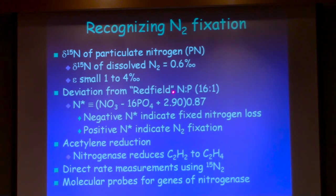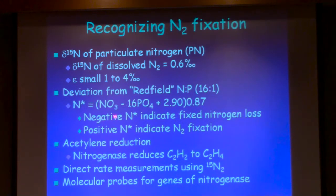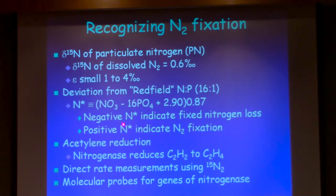Deviations from the Redfield ratio can also be used — we expect that the Redfield ratio will be maintained in dissolved nutrients. The 16-to-1 N-to-P ratio: if we see a deviation from that, a positive N2 fixation adds to it. If you have more nitrate than you would expect for phosphate based on that Redfield ratio, this N* defined globally from nitrate and phosphate concentrations shows an increase — a positive N* value indicating a positive deviation. A negative deviation indicates nitrogen loss through anammox or denitrification.